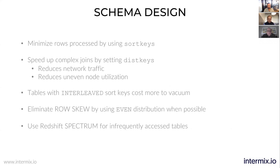To summarize schema design best practices: use sort keys — it's a great idea when you're frequently filtering on a certain column so that Redshift ensures data is sorted for faster lookups. Speed up complex joins by using distribution keys. You can also have compound sort keys in Redshift, allowing you to define more than one sort key.